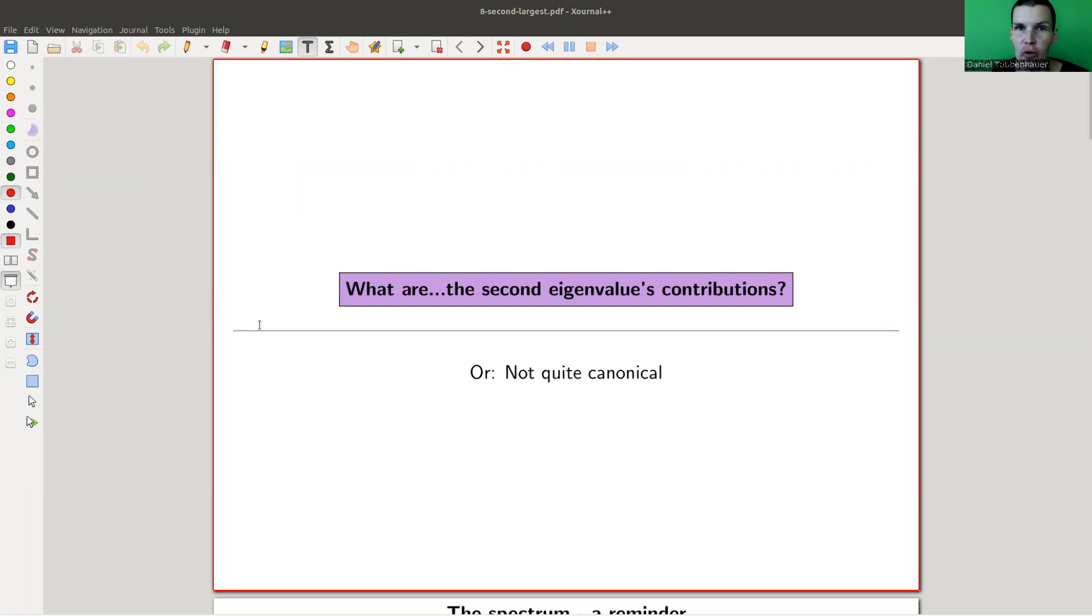Welcome everyone to my continuation of what is algebraic graph theory. Today we would like to look at a slightly disappointing topic. Not really, but here comes the idea. I hope I convinced you by now that the spectrum itself is a ridiculously great invariant and easy to compute statistic data of a graph.